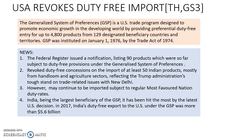However, under the Donald Trump administration, many changes are being brought. The first change is that 90 products from many countries which were so far duty-free under the Generalized System of Preferences were removed from the list. In the list of revoked products, at least 50 products are Indian. However, these products can still be exported to the USA under Most Favored Nation rates as given in WTO.